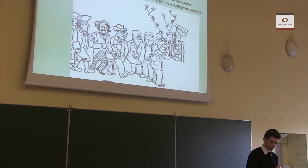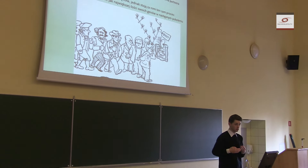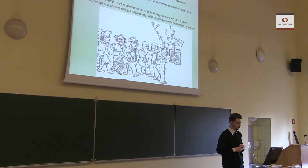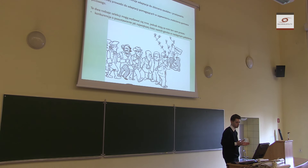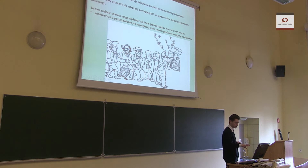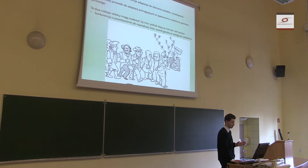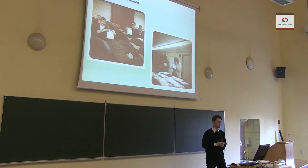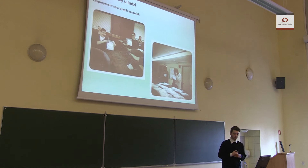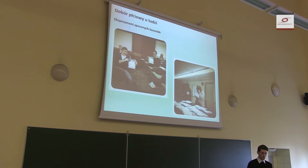Chciałbym przejść do tego, w jaki sposób u ludzi występuje dobór płciowy. Tutaj możemy zobaczyć z czasem zmieniające się mody, gdzie mamy współczesnego naukowca, który próbuje rozwikłać te zagadki stojące za tym, jak dzisiaj wyglądają organizmy. Chciałbym pokazać kilka przykładów, jak dobór płciowy może działać na populacji ludzkiej.